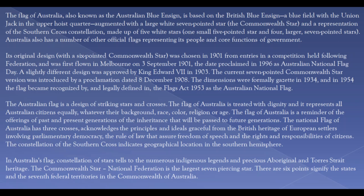A slightly different design was approved by King Edward VII in 1903. The current seven-pointed Commonwealth Star version was introduced by a proclamation dated December 8, 1908. The dimensions were formally gazetted in 1934, and in 1954 the flag became recognized by, and legally defined in, the Flags Act 1953 as the Australian National Flag.